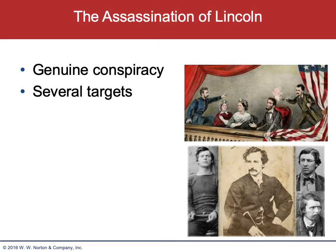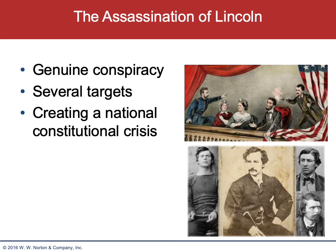What many people don't realize is that the purpose of this conspiracy was to create a genuine national constitutional crisis. If the president and the vice president were both killed, there was nothing in the Constitution dictating who took the presidency. The assumption had always been it would be the Secretary of State, but others believed it was the Speaker of the House or the president pro tem of the Senate. This doesn't get resolved until the 25th Amendment, passed sometime in the 1960s. This would have been a genuine constitutional dilemma for the country.